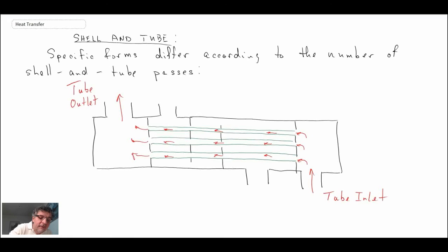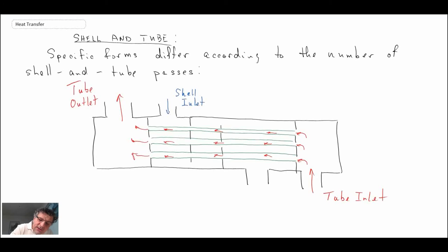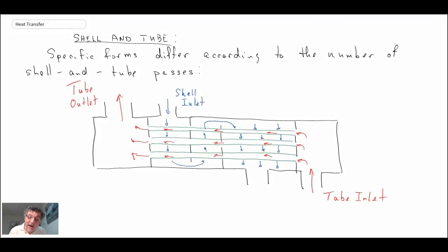There is another flow coming in at the shell inlet. Outside the tube bundle there is a shell, and the shell-side flow is forced to go normal — cross flow — across the tube bundle. It turns direction multiple times and exits at the shell outlet. So those are the two fluid stream directions in the shell and tube heat exchanger.